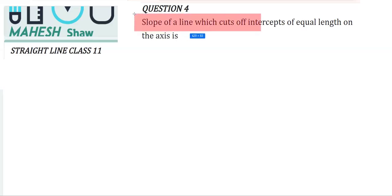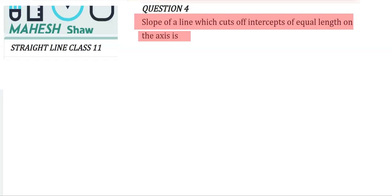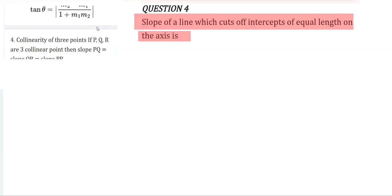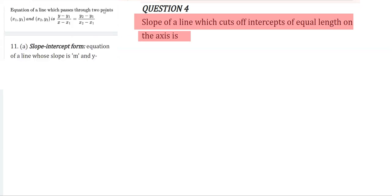The next question says the slope of a line which cuts off intercepts of equal lengths on the axis. That means here x and y intercepts are equal. Now we have a formula for finding the equation of a line in the intercept form.